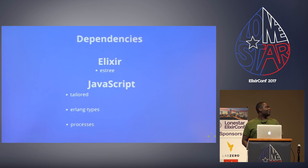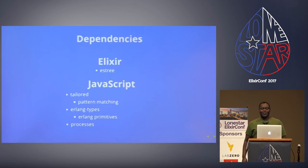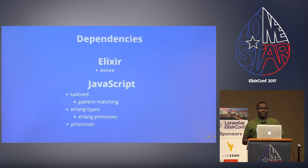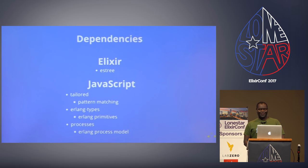There are also three JavaScript modules created for ElixirScript. The first is 'tailored,' the pattern matching library. The second is the Erlang types library, which has Erlang primitives — ElixirScript uses JavaScript equivalents when it can, but for things like references, PIDs, tuples, and bit strings, this library creates JavaScript implementations. The third is 'processes,' the Erlang process model, which isn't really integrated into ElixirScript just yet.